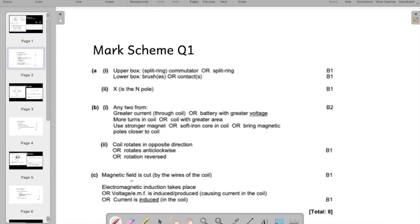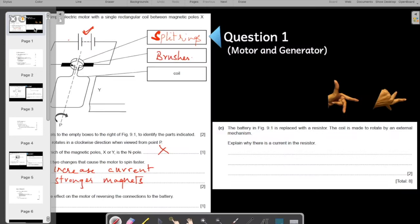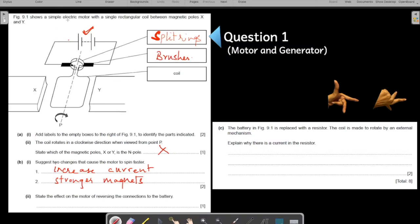Let's see what the mark scheme also says. Yes. Any two of the following: greater current or stronger battery means the same thing, more number of turns, use stronger magnets, or you can bring the magnets close together. It will also increase the magnetic field. So any one of these two. Two points only you have to give because it is just a two mark question.